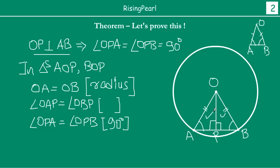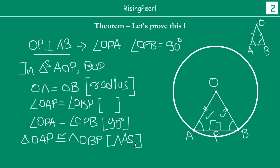So in these two triangles, we have: OA equals OB, angle OAP equals angle OBP, and angle OPA equals angle OPB. Because of this, we say triangle OAP is congruent to triangle OBP as per the AAS — Angle Angle Side — congruence rule. In AAS, if two angles in one triangle are equal to two corresponding angles in the other, and any one corresponding side is equal, then the triangles are congruent. We covered AAS congruence in Series 7.